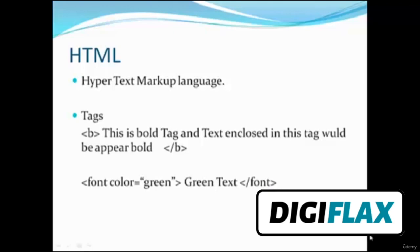There are also attributes in tags. We have the font tag, which is generally used to give various styles to our font. For example, if we want to give color and size to text, we can use the font tag. We pass an attribute in the font tag and give its property value. Here we are giving green to our color, so the text will be displayed in green color. This is about HTML markup, tags, and attributes.